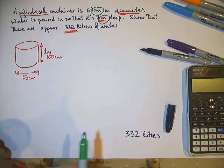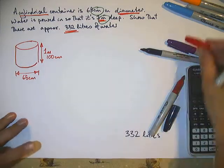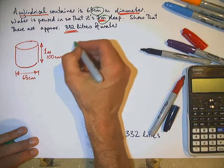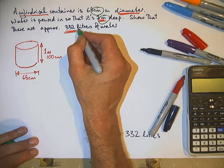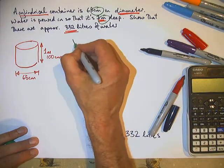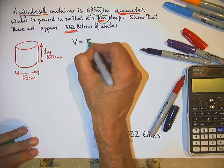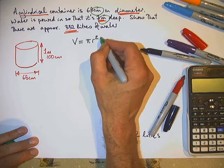What do we need to use here? It's a cylinder. Litres are measures of volume. Volume of a cylinder is pi r squared h.